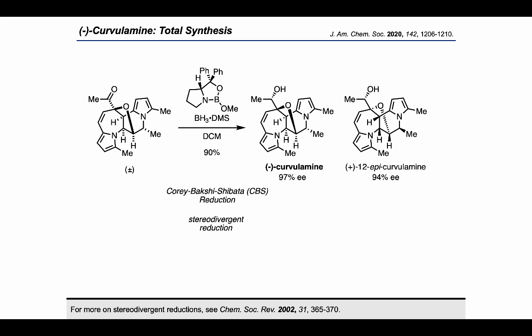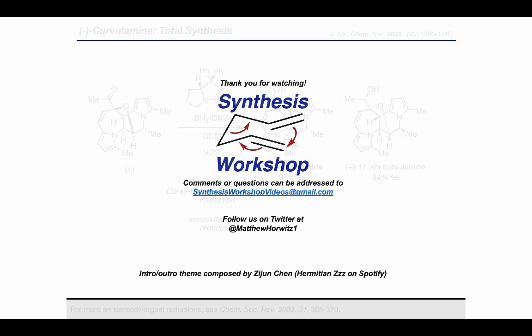Fortunately, these products were separable, and this ended up being a very nice approach to getting multiple targets with the same synthetic route. With that, the Maimone group completed the synthesis of the challenging bispyrrole alkaloid curvulamine. Thank you for joining us today on Synthesis Workshop. Feel free to like and subscribe and send any questions and comments you have to us by email. Follow us on Twitter to stay up to date, and see you next time!